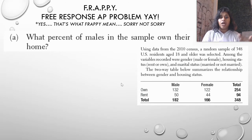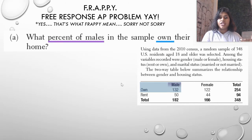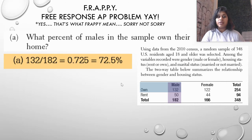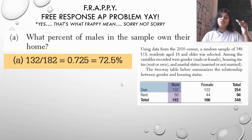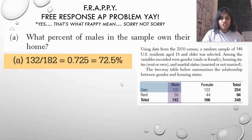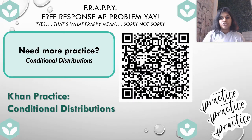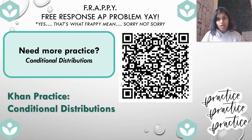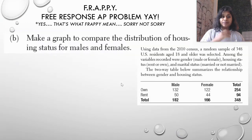I want to look at the row of ownership and the column of males. Honing in where those two intersect, 132 is my numerator, and my denominator is the total number of males — because the question asks what percent of the males own their home. If you need more practice on conditional distributions or marginal distributions, there's practice linked here.